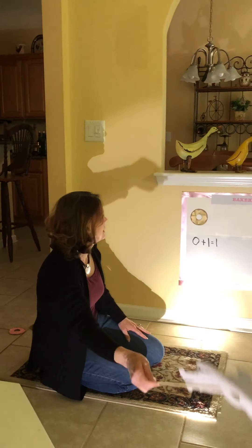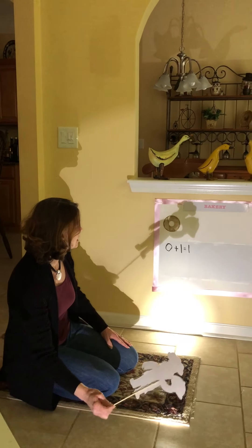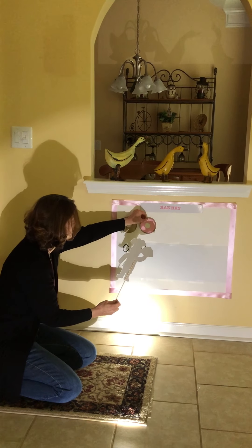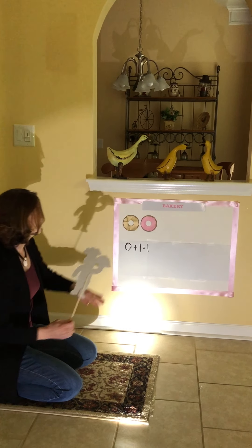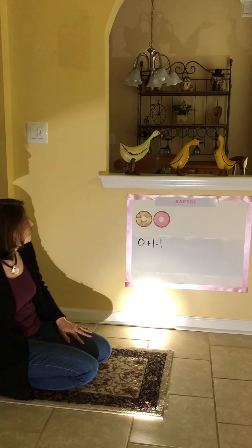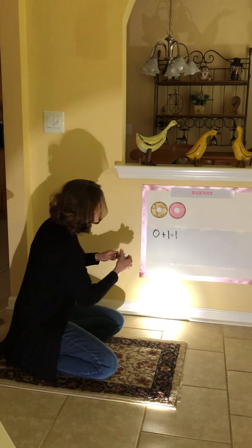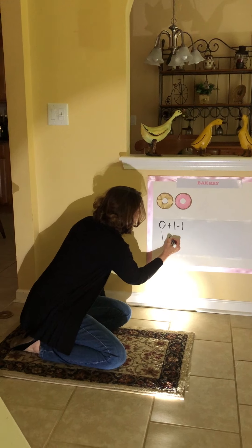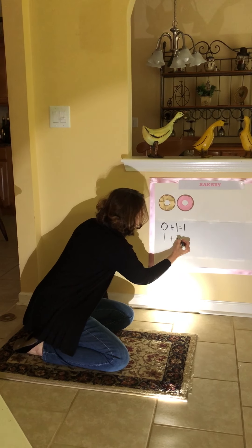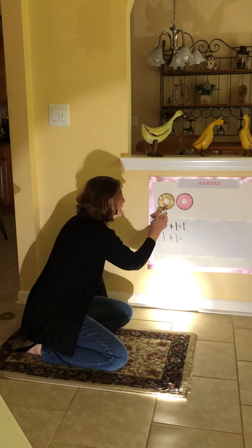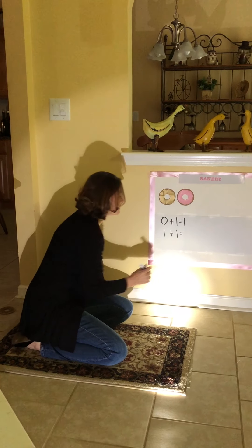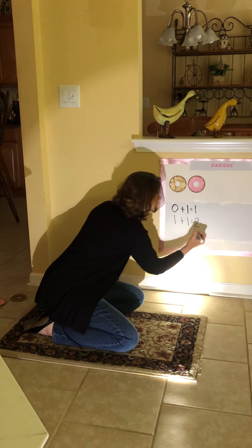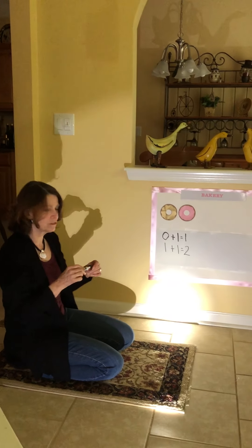All righty. Kids are going to get cavities with all these donuts you want me to make. All right. We had one, and we added one. And how many do we have now? That's right — two. This is a good way for you to practice writing your numbers.